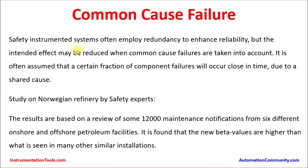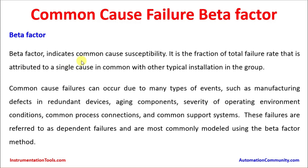Safety instrumented systems often employ redundancy to enhance reliability, but the intended effect may be reduced when common cause failures are taken into account. It is often assumed that a certain fraction of component failures will occur close in time due to a shared cause. A study on a Norwegian refinery by safety experts reviewed some 12,000 maintenance notifications from six different onshore and offshore petroleum facilities. Results found that beta values are higher than what is seen in many similar installations. The beta factor indicates common cause susceptibility — it is the fraction of total failure rate attributed to a single cause shared with other installations in the group.